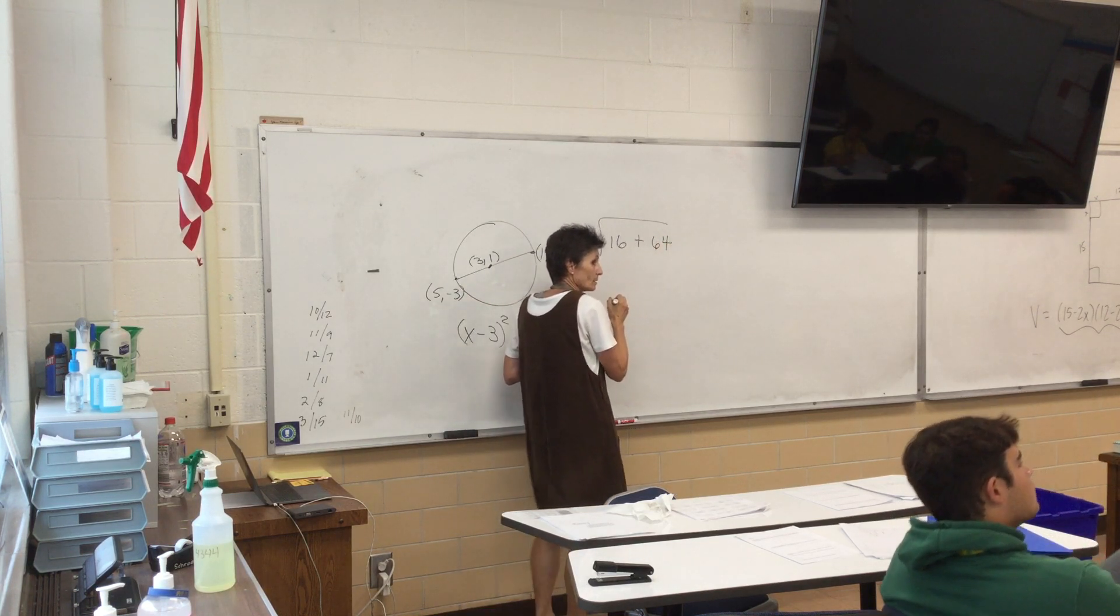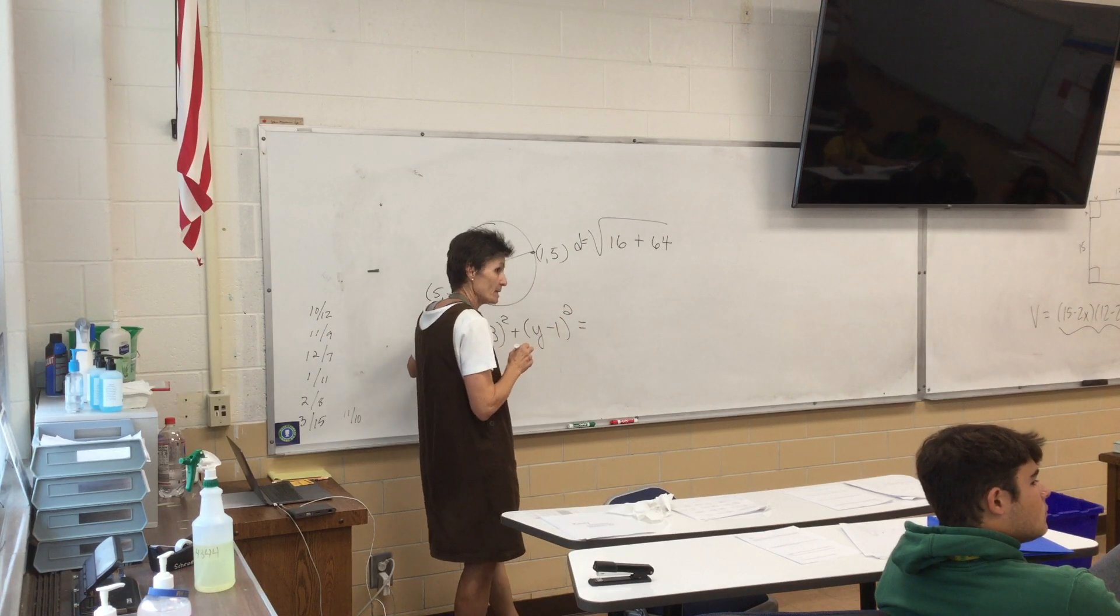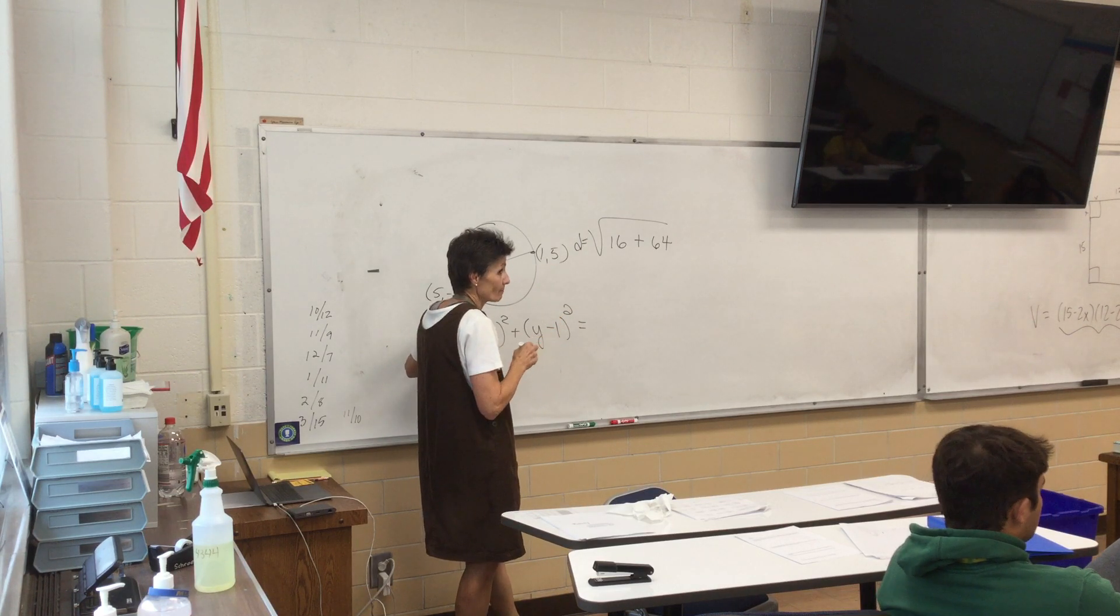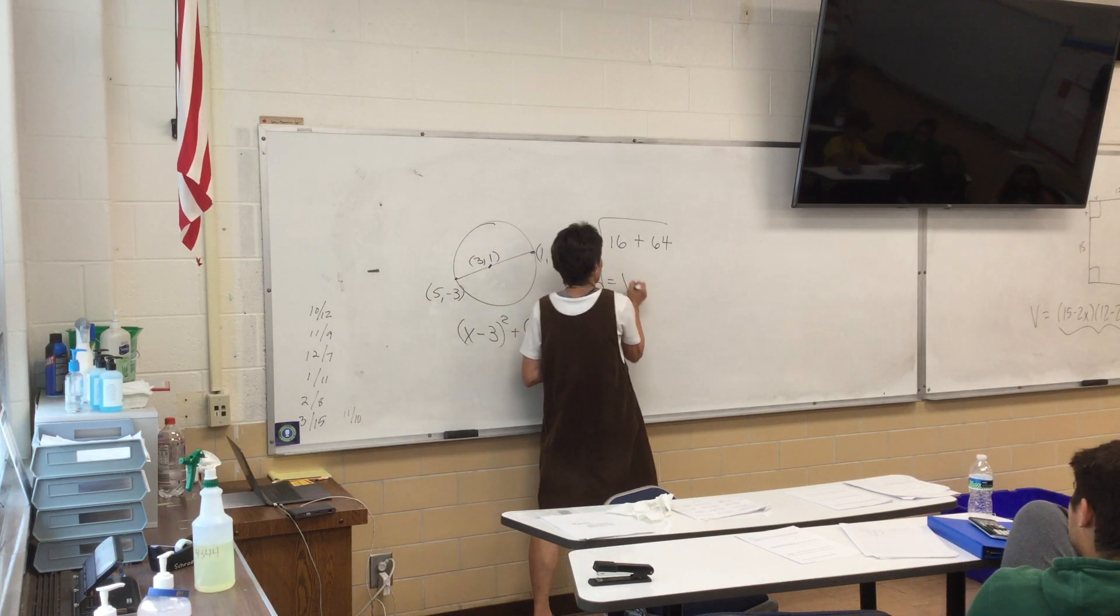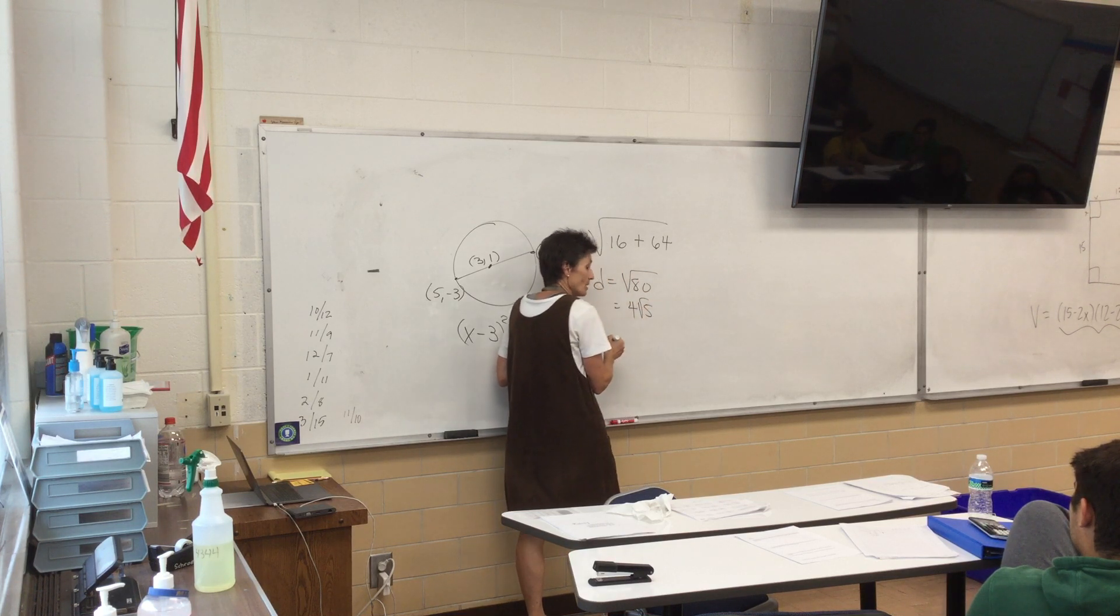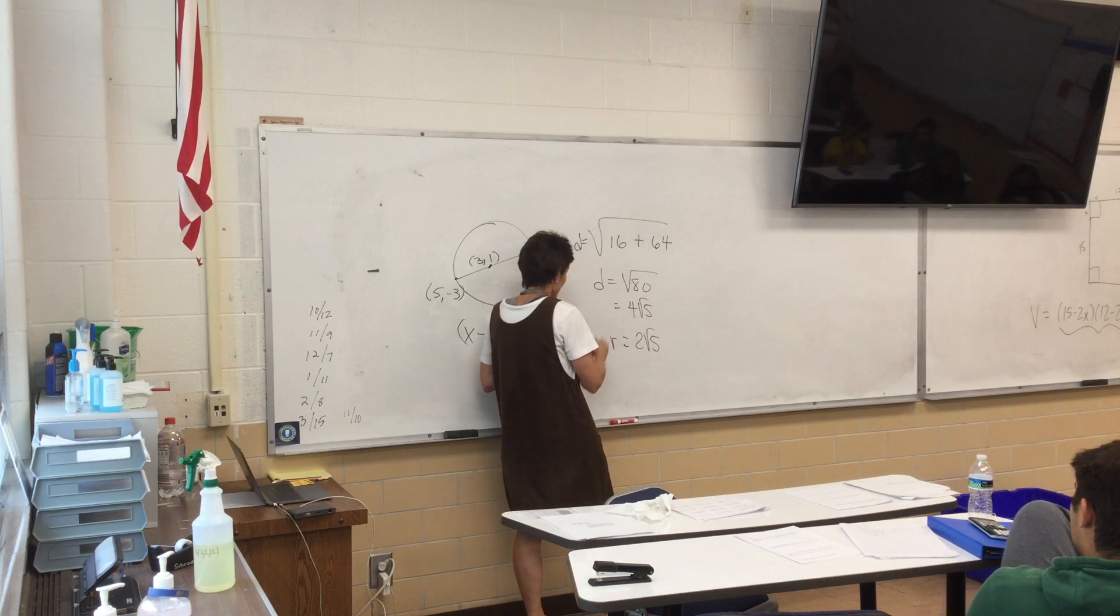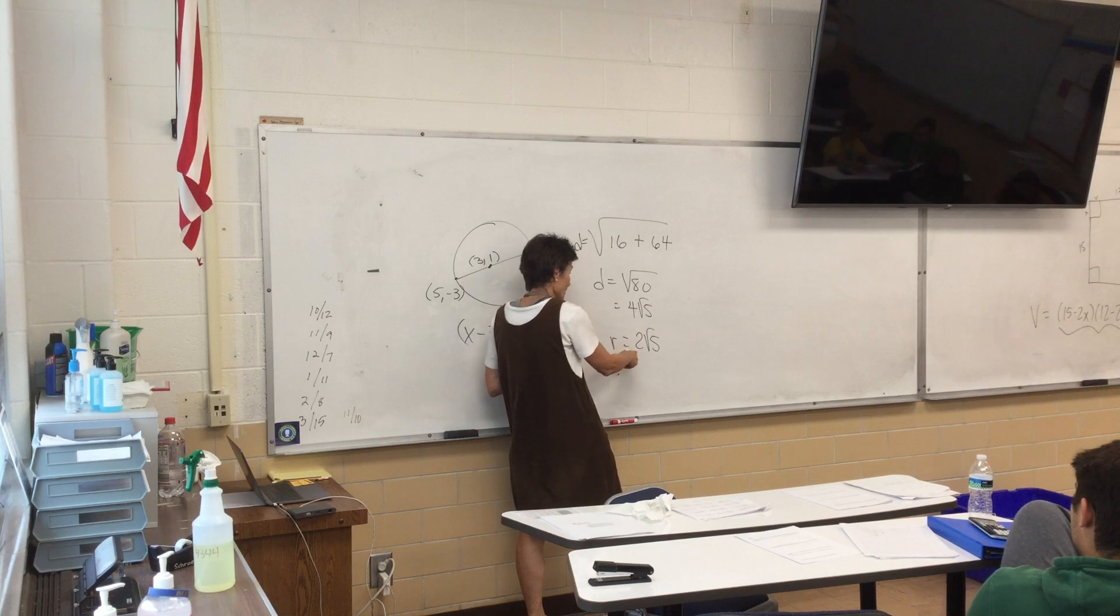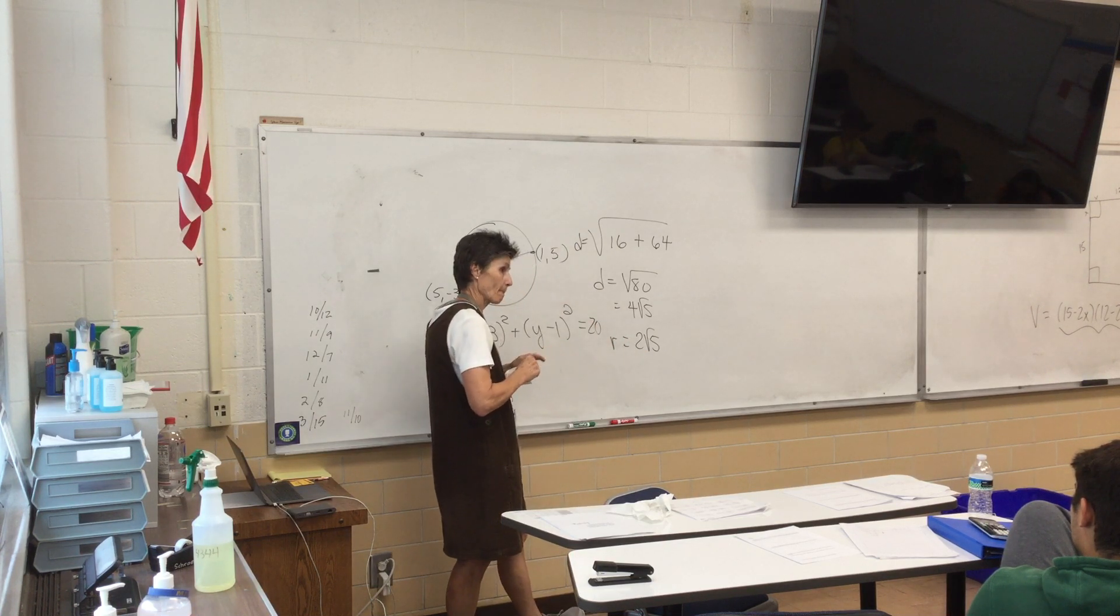I had it backwards on my thing. Well, five minus negative three. Oh yeah, I switched up the y coordinates. So the diameter is root eighty, which is four root five. So the radius would be two root five. So I have to square that to put it here. So that would be four times five, that would be twenty.